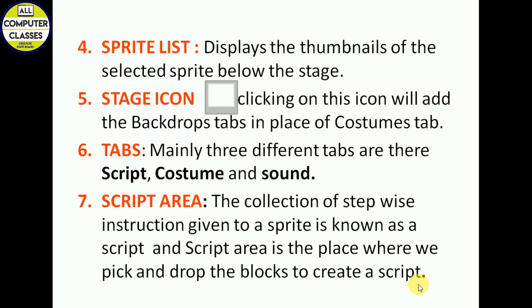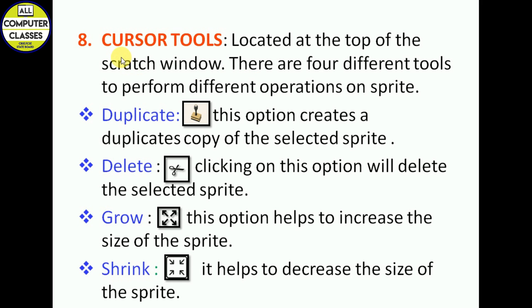There are four cursor tools located at the top of the Scratch window. Duplicate — press the stamp button to duplicate a sprite. Delete — press the scissors button to delete a sprite. Grow — keep pressing this button to increase the size of the sprite. Shrink — the opposite of grow; press this button to decrease the size of the sprite.